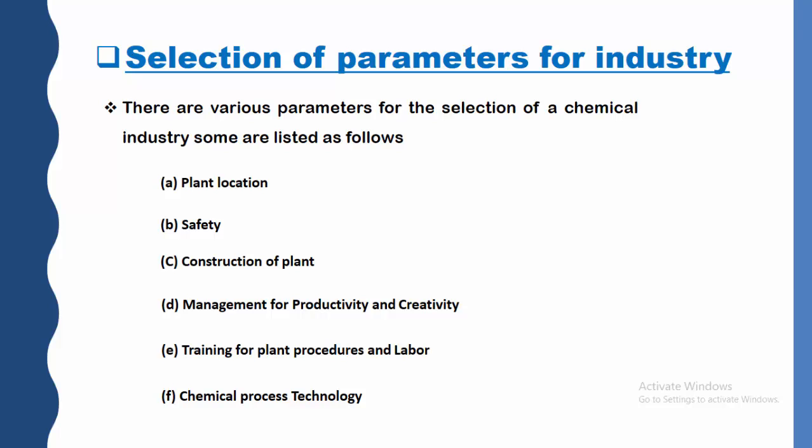Next is selection of parameters for a chemical industry. This is very important. Suppose after completing your B.Sc. degree or higher education, if you would like to establish a chemical industry, the parameters required — how and which type of parameters to select — are important. There are various parameters for the selection of a chemical industry. These are: plant location, safety, construction of a plant, management for productivity and creativity, training for plant procedure and labour, and chemical process technology. Let's see one by one.